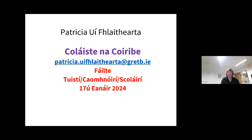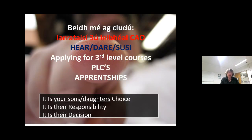You're all very welcome, and thank you for tuning in. Let's hope that this is of some value to you and your students. I just want to go through the whole process of the CAO system, and we'll cover the areas of HERE, DARE, and SUSI. For anybody who doesn't know, HERE is the Higher Education Access Route to education. DARE is the Disability Access Route to Education, and SUSI is where a student, if they're eligible, can get a grant for going to college.